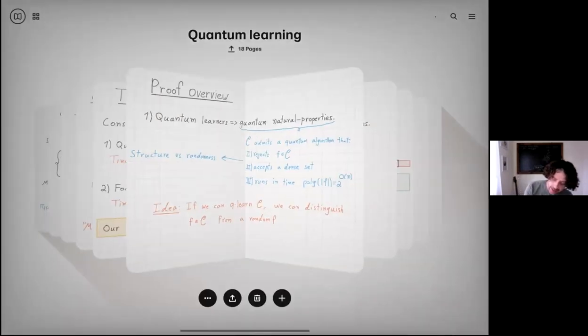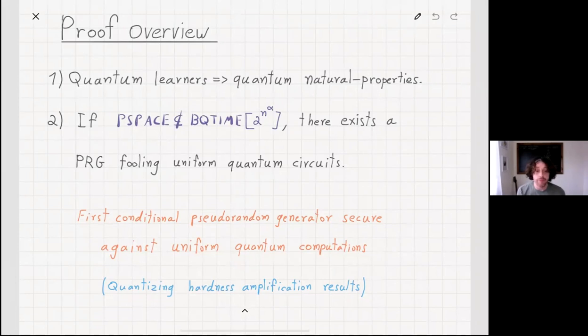Then the second step, we show in fact the first conditional pseudorandom generator which is secure against uniform quantum computation. The idea is that assuming that P-SPACE is not contained in quantum time which is two to the n over alpha for some alpha, then if we have this assumption, we can use it to fool uniform quantum circuits.